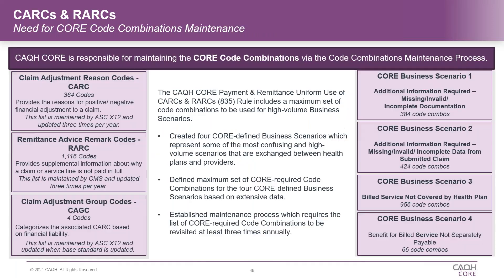We've set up a set of core code combinations with specific business scenarios that core maintains — there are four of them today. We look at all the hundreds of thousands of potential codes between the RARCs, CARCs, and the four group codes, and determine what are the best messages that health plans can look at to map their internal proprietary codes as accurately as possible with the standardized codes maintained by X-12 and CMS for the remark codes, pulling these together into a really helpful resource and tool so providers have that information and can move forward with auto-posting.